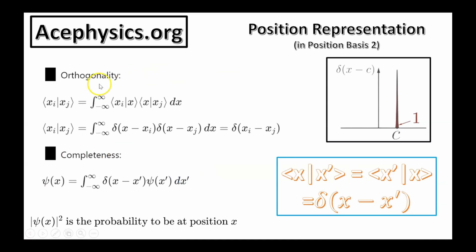Now I want to talk about the important properties of the Dirac delta function. The orthogonality condition ensures that different position states represented by the Dirac delta function are mutually exclusive. The completeness relation indicates that any wave function can be expressed as a sum over position eigenstates, emphasizing the ability to reconstruct the wave function entirely from these basis functions.